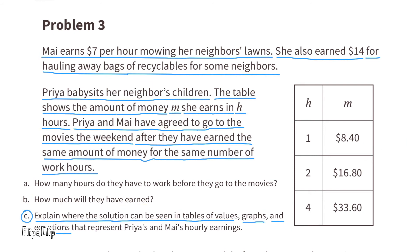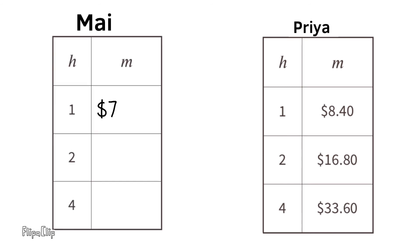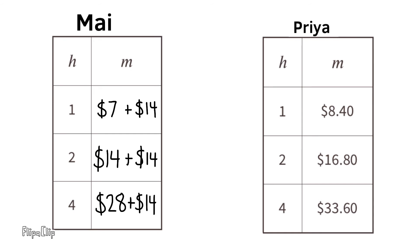Part C: explain where the solution can be seen in tables, graphs, and equations representing Priya's and Mai's hourly earnings. They've made a table for Priya, but we can make a table for Mai. In one hour, Mai earns $7 plus the $14 for recyclables. In two hours, she earns $14 plus that same $14 for recyclables. In four hours, Mai would earn $28 plus that $14 for the recyclables.